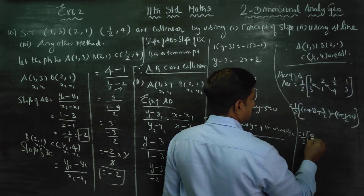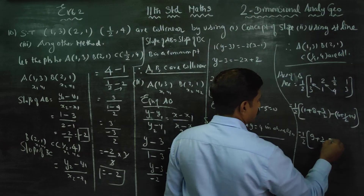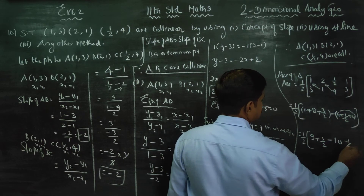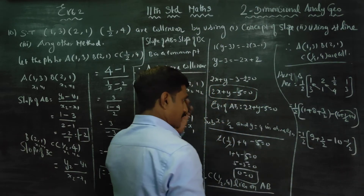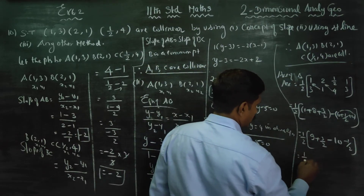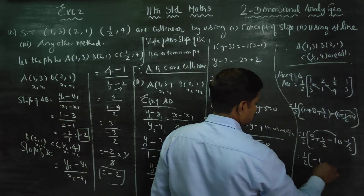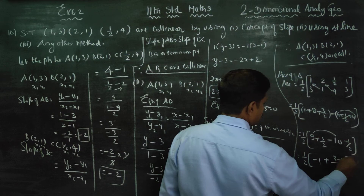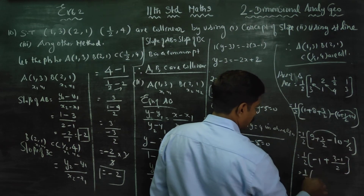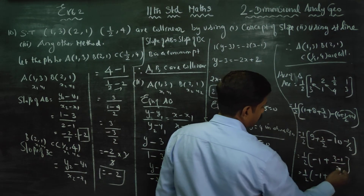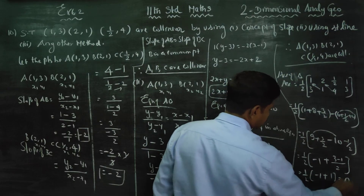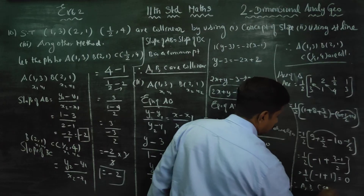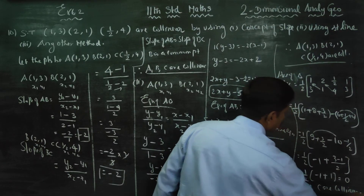Continuing the area calculation: 1/2 times [(1 plus 8 plus 3/2) minus (6 plus 1/2 plus 4)]. That is 1/2 times [(9 plus 3/2) minus (10 plus 1/2)]. Taking LCM of 2: 1/2 times [(18/2 plus 3/2) minus (20/2 plus 1/2)]. That gives 1/2 times [21/2 minus 21/2], which equals 1/2 times 0. The answer is 0. Therefore A, B, C are collinear.